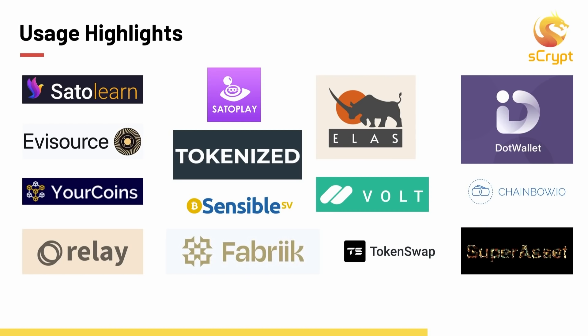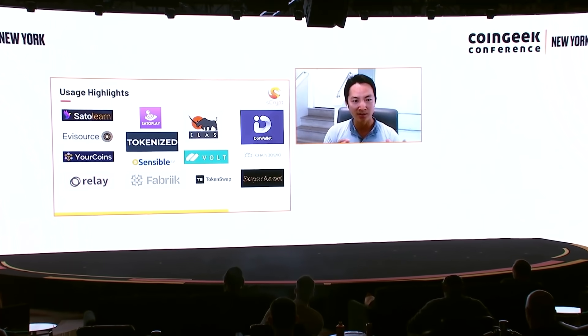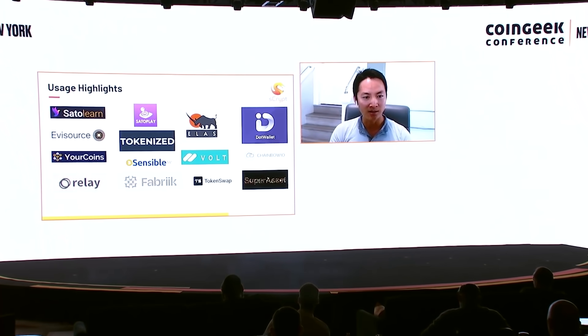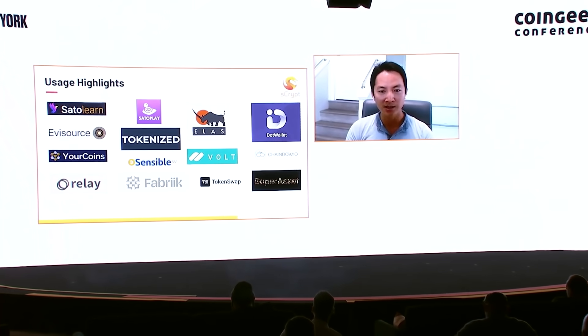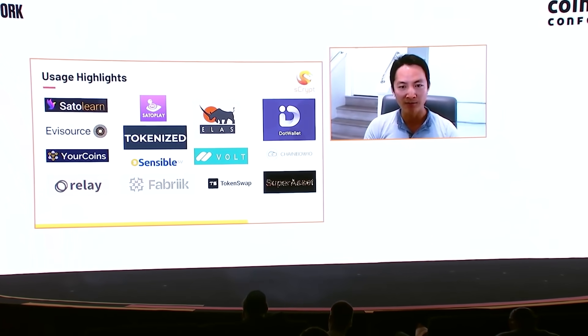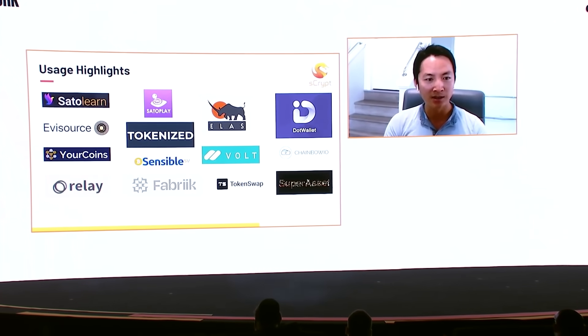We've seen a lot of projects adopting our technology — either building whole products based on sCrypt, such as token swap, which is generating a lot of transactions these days. We also see pretty much most of the major players putting sCrypt as part of their technology stack. For example, we've seen different token systems: ELAS, Sensible Token, and Fabric Token. We also see wallets supporting us, like Vault and DotWallet. And RelayX is using some of our technology for time-lock during on-chain exchange.